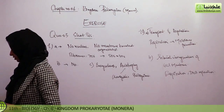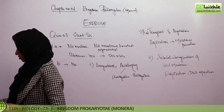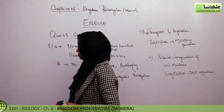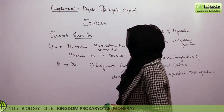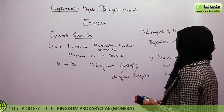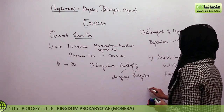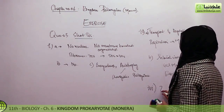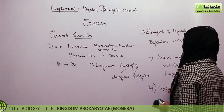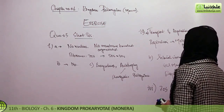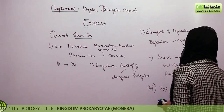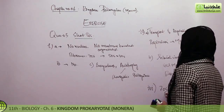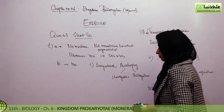Third question: what is unique about the structure of bacterial ribosomes? Bacterial ribosomes are 70S, composed of 50S plus 30S subunits.